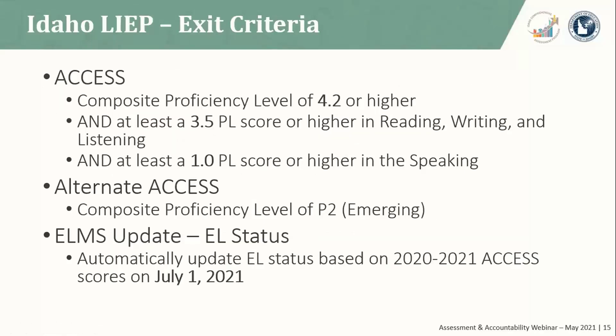As a reminder, this slide describes Idaho's language instruction educational program exit criteria. Students will exit an LIEP when they attain a composite overall English proficiency level of 4.2 or higher with a proficiency level score equal to or greater than 3.5. Students who meet the Idaho alternate assessment participation criteria and who participated in the Alternate ACCESS will exit an LIEP once they attain an overall proficiency level of P2 or emerging. ELMS is scheduled to automatically update a child's English learner status on July 1st, so please be on the lookout for that.